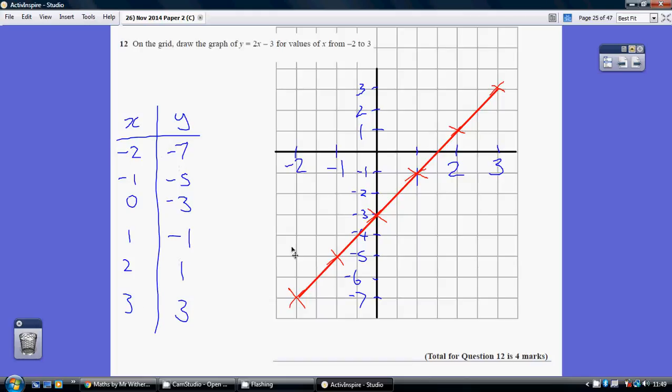I've generated all six coordinates which I've plotted. I realize that it's going to be in a straight line, so if any of these are not appearing in the straight line, I would go and double check my working.